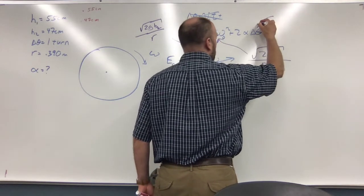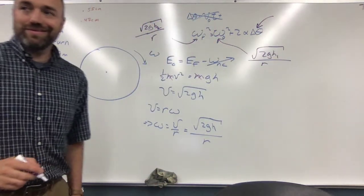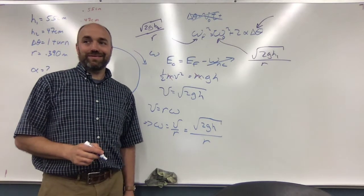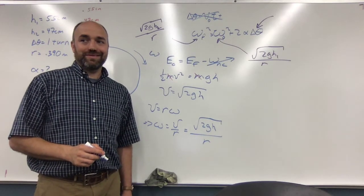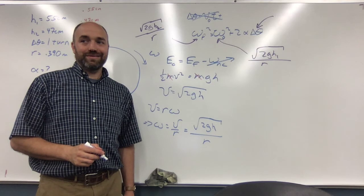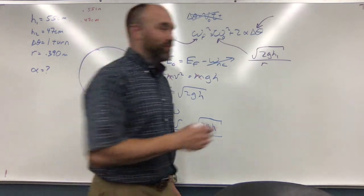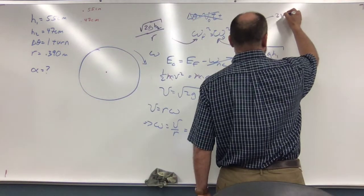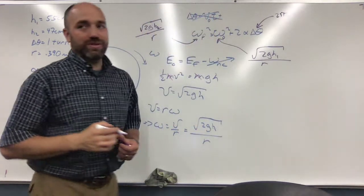And what would delta theta be? Two pi? Yes. One revolution later, two pi. Because it always has to be in radians.